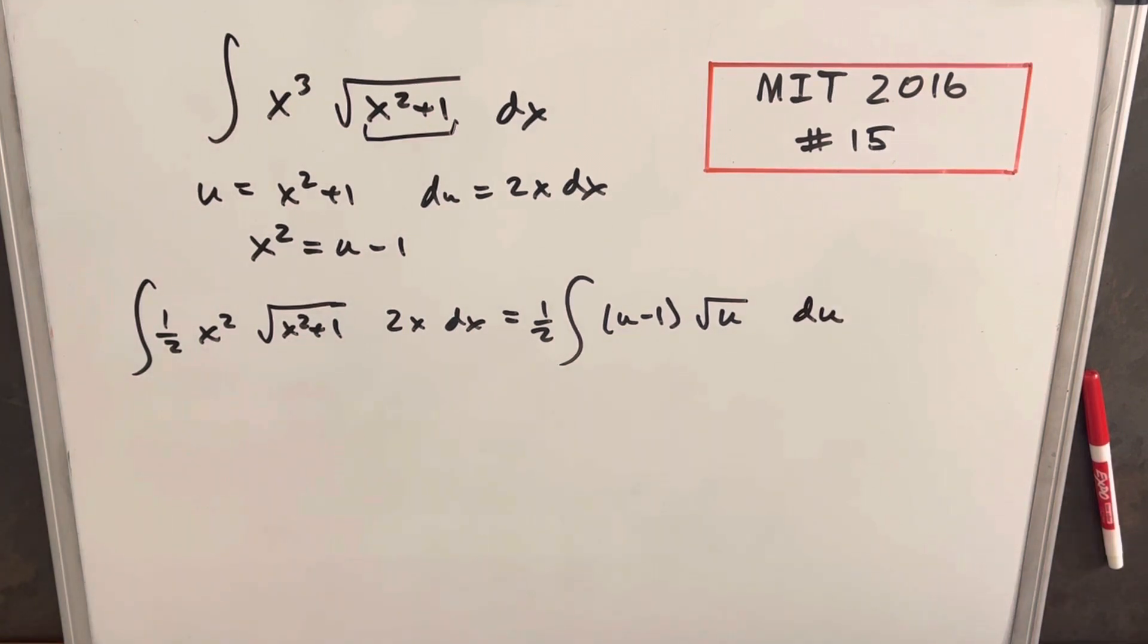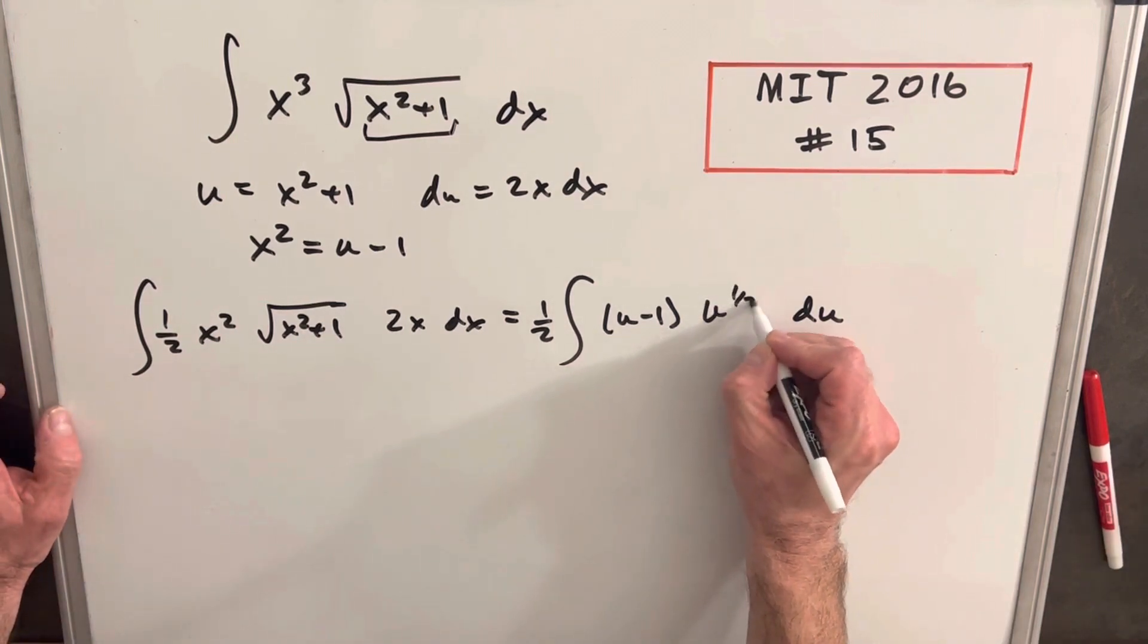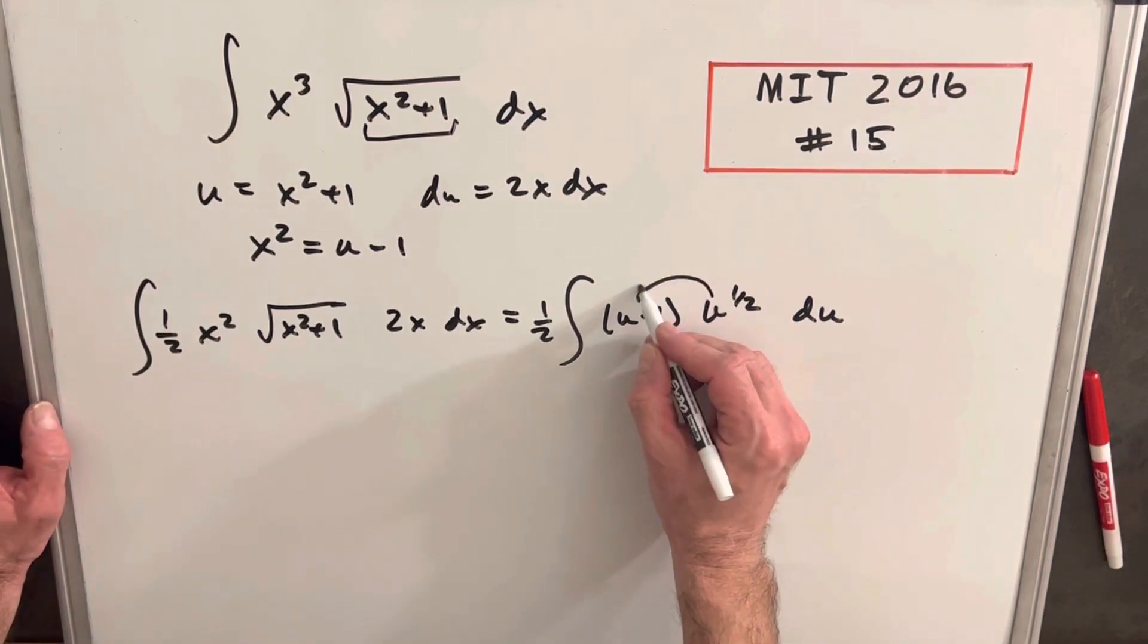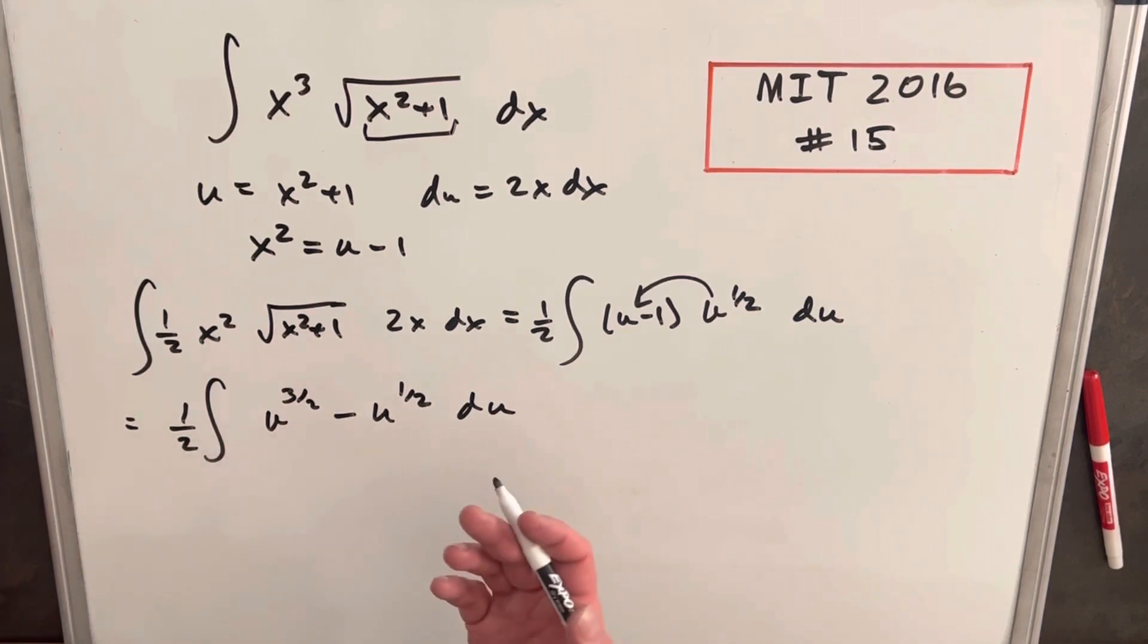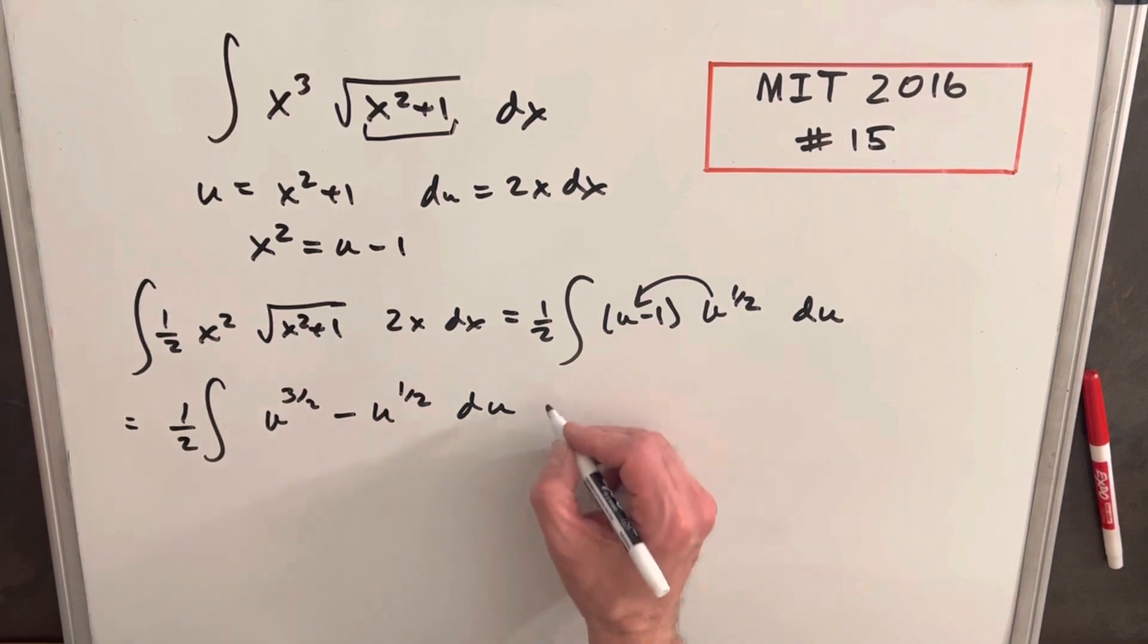I think what I'm going to do before I distribute this and clean it up, I'm just going to write this as u to the 1 half so that I can distribute it in here. Okay, and now this is distributed, and what we can do is we're set up perfectly for the power rule, so we'll do that.